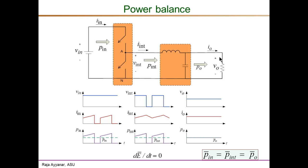Moving to the output stage: the output voltage is regulated by control to a constant DC value — the switching frequency ripple is negligibly small and we neglect it. For a simple resistive load, the output current is also a perfect DC value equal to v_o divided by the resistance. The power is the product of these two instantaneous quantities, which is a constant, so p_o bar equals p_o instantaneous.